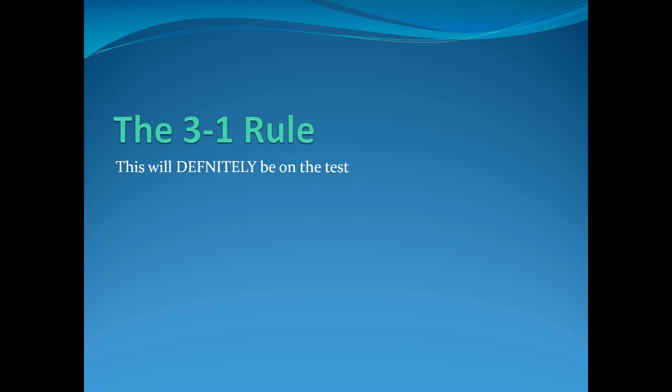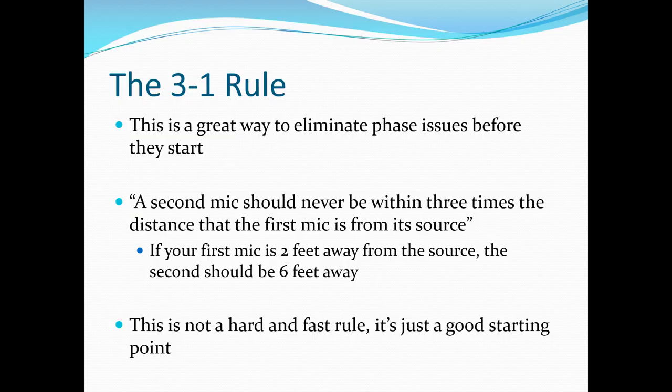Another way to deal with this in general is the three-to-one rule — this will absolutely be on the tests coming up. This is a great way to eliminate phase issues before they start. The rule is that a second mic should never be within three times the distance that the first mic is from its source. So if you're recording a guitarist and your first mic is two feet away from the guitar, the second should be six feet away. This is not a hard and fast rule, just a good starting point. You could have the second mic six feet behind the first, or six feet to the side.